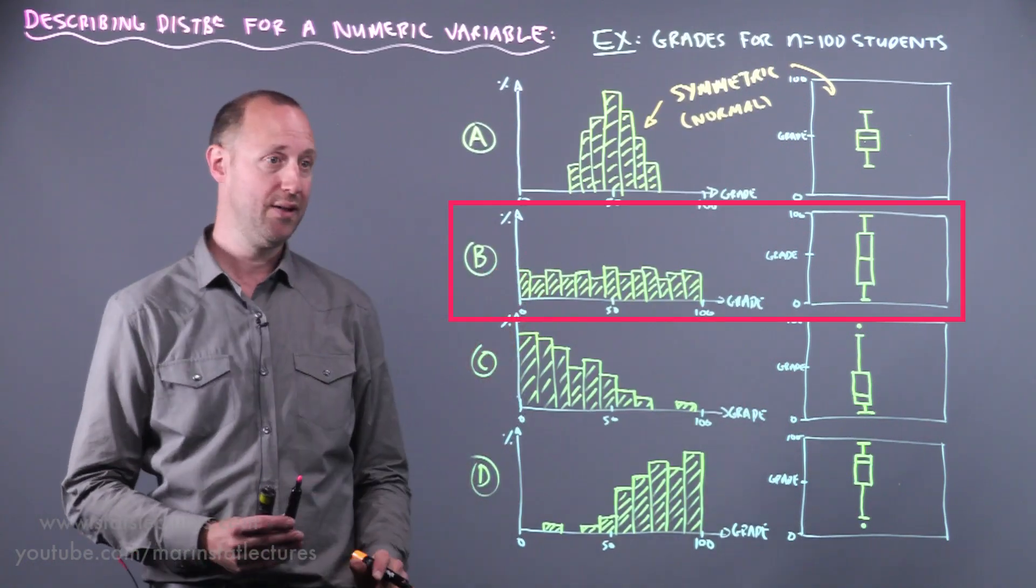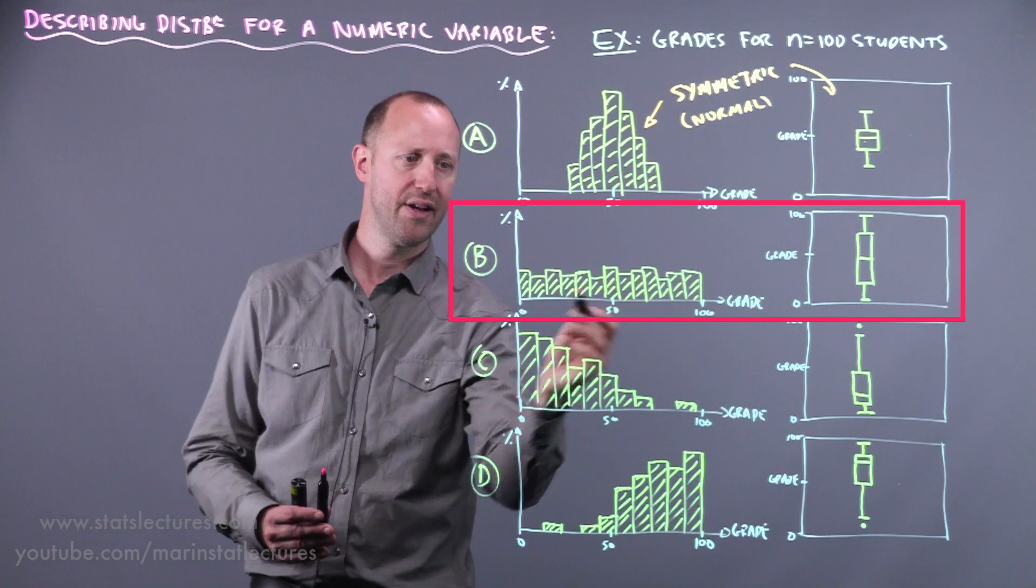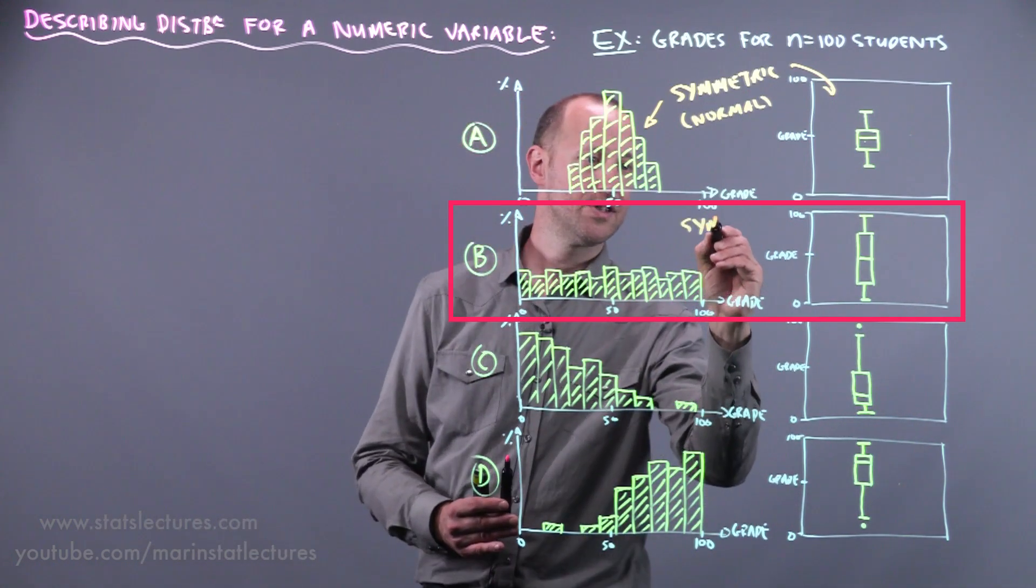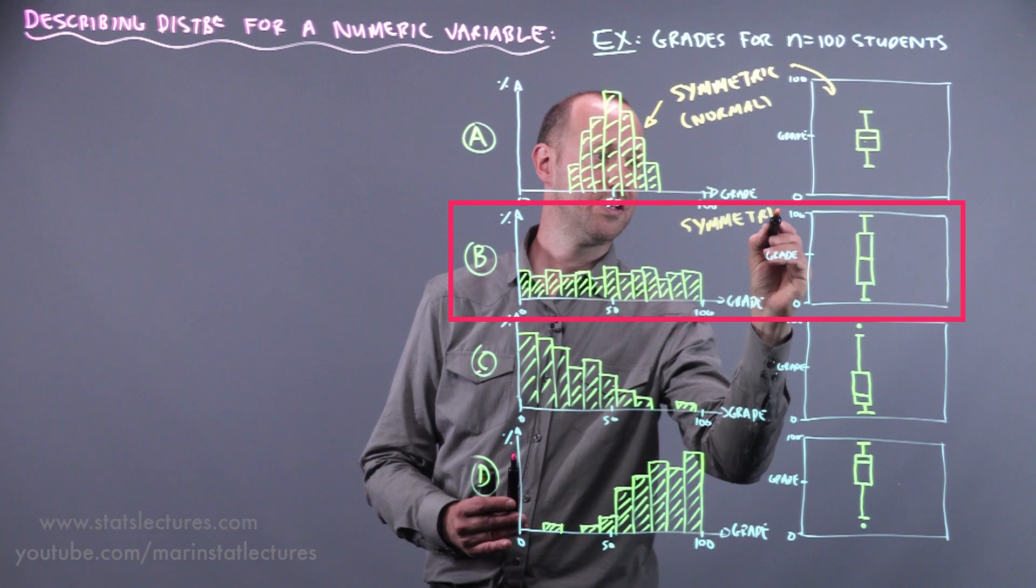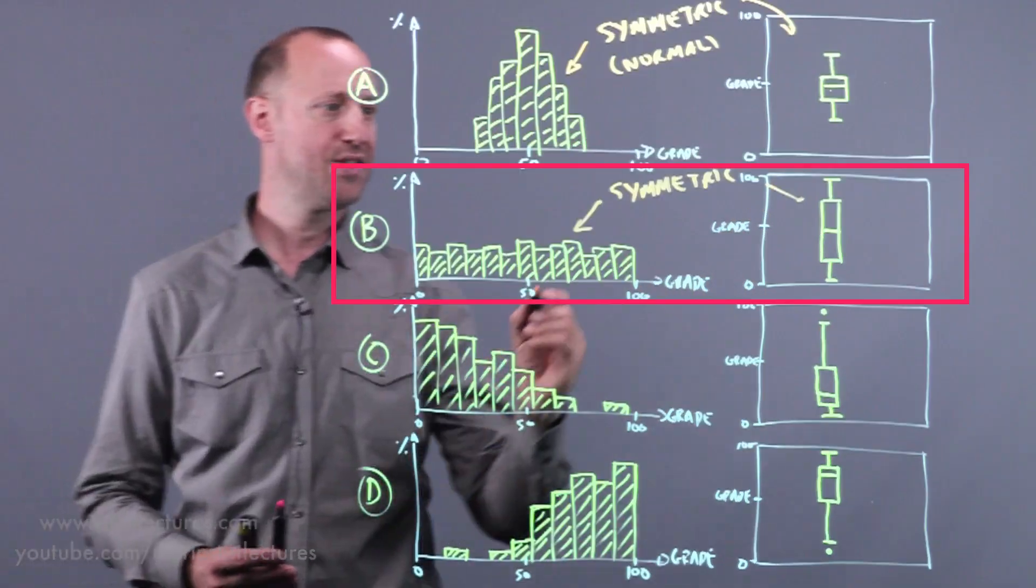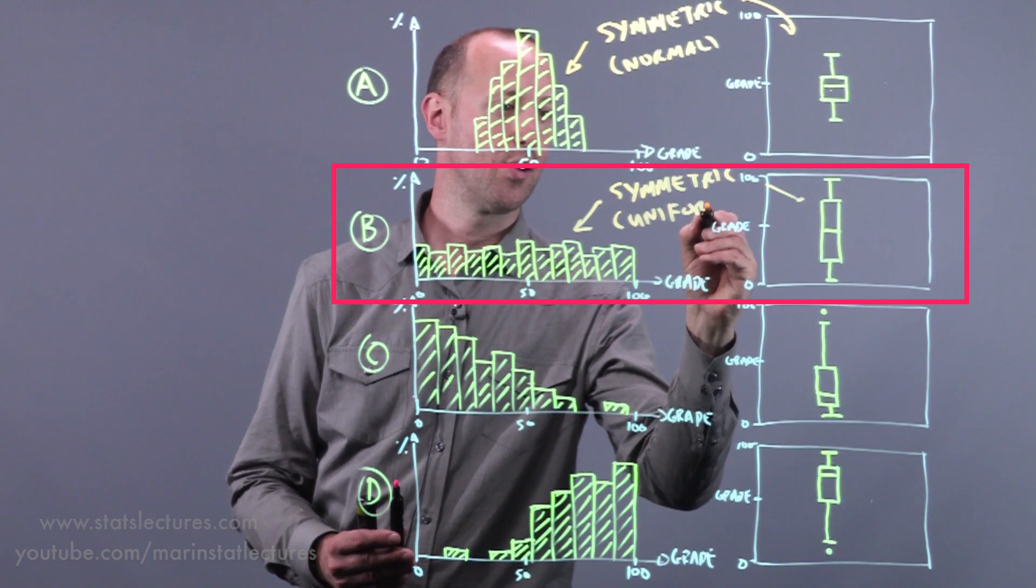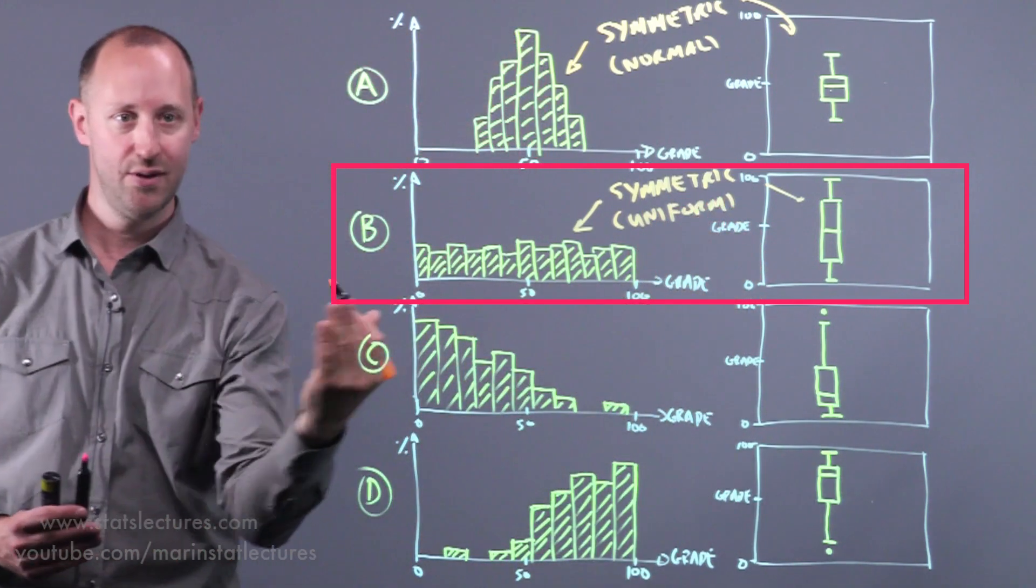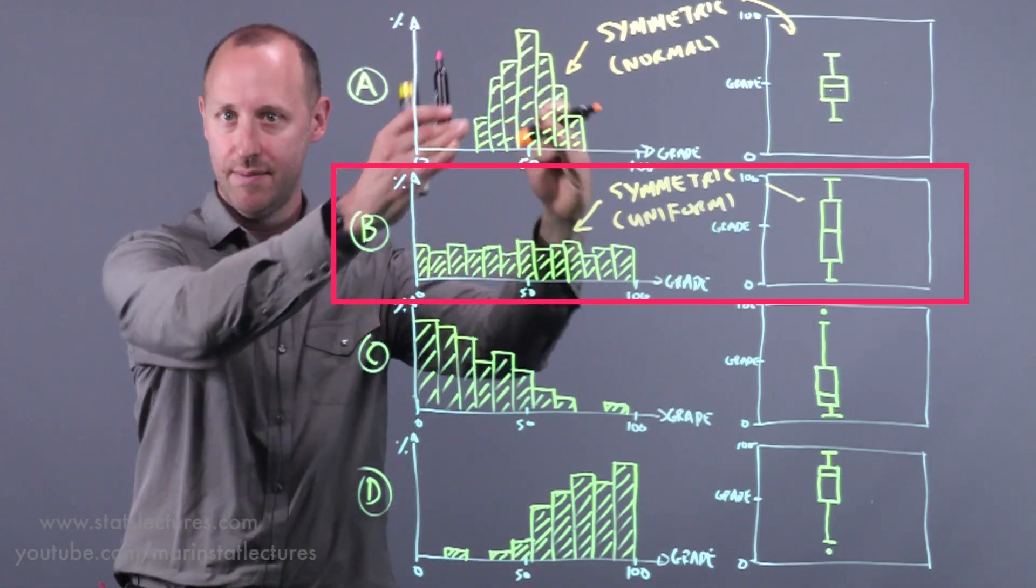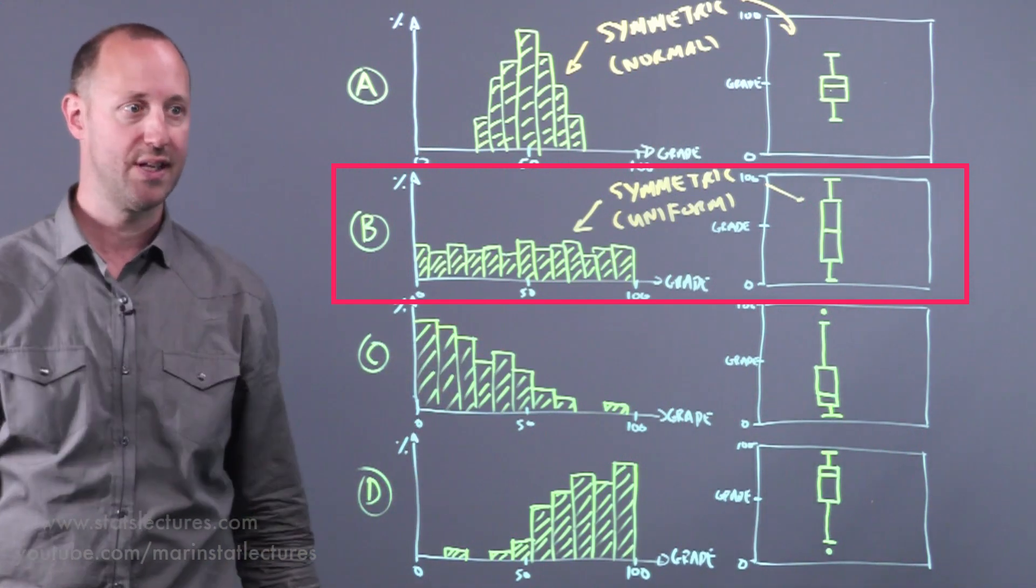Now this second example B here, it looks fairly symmetric. If we look, the center looks roughly there and it looks pretty evenly or symmetrically distributed around that. It looks pretty symmetrically distributed around its center. And this is one that later is going to get called uniform or evenly or uniformly distributed. So it's symmetric and rather than being bell-shaped and decreasing, it's fairly evenly distributed around its center.